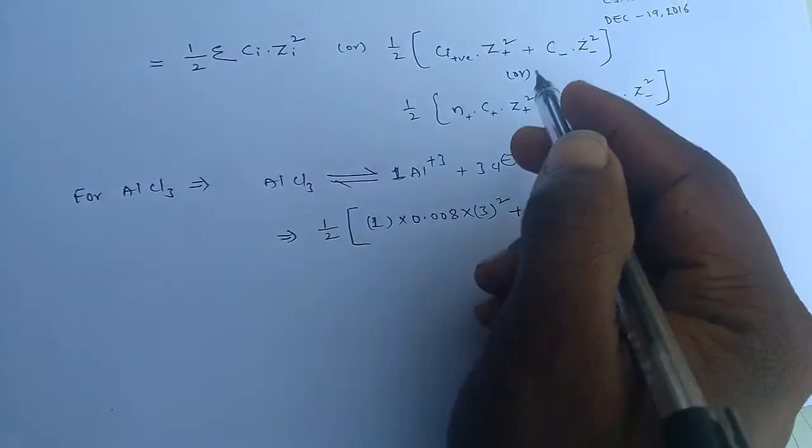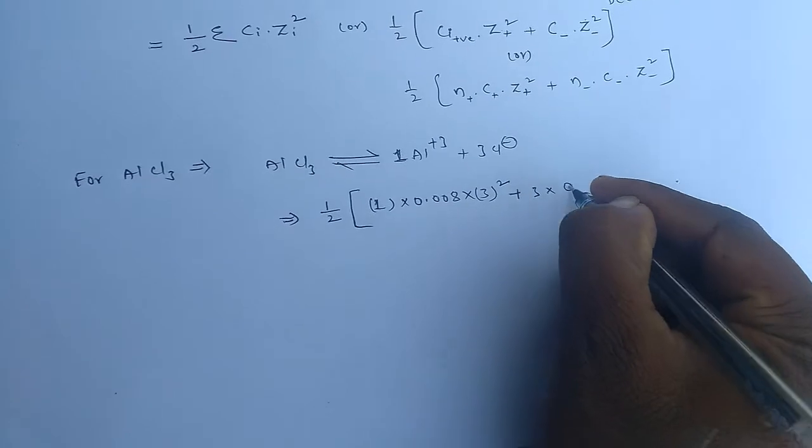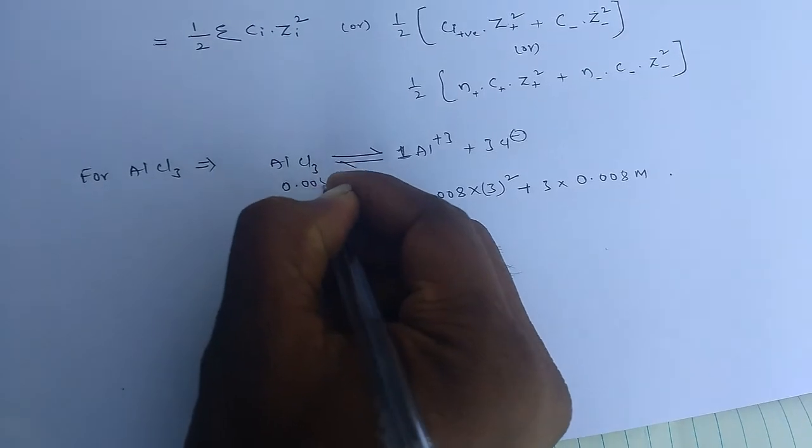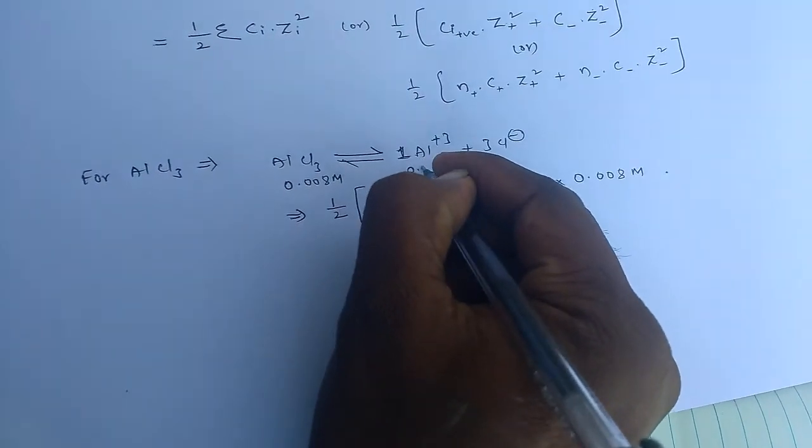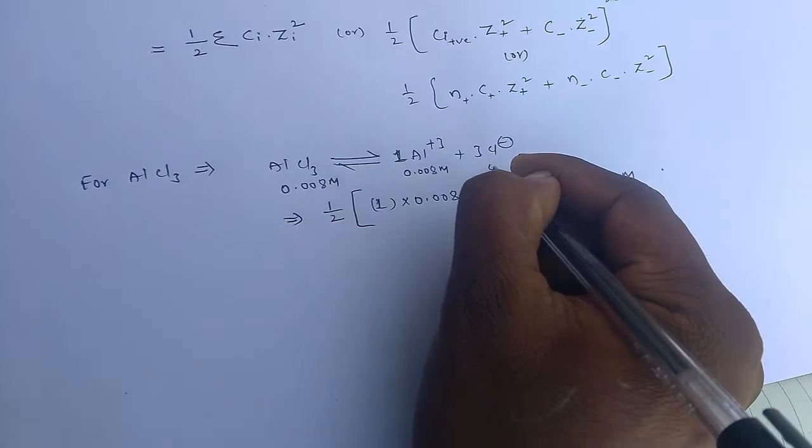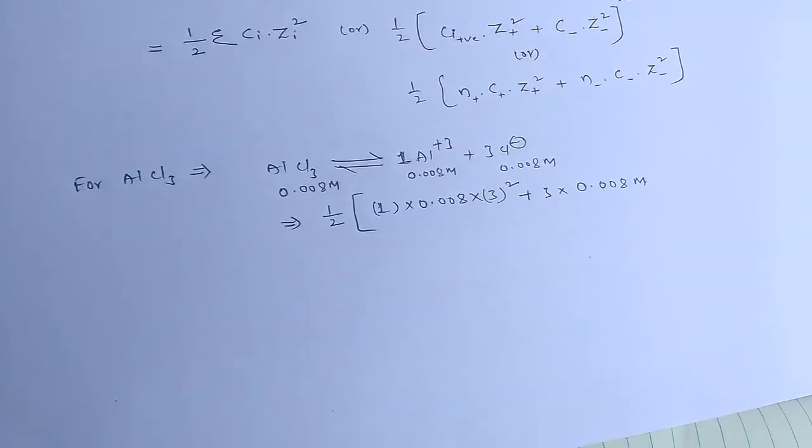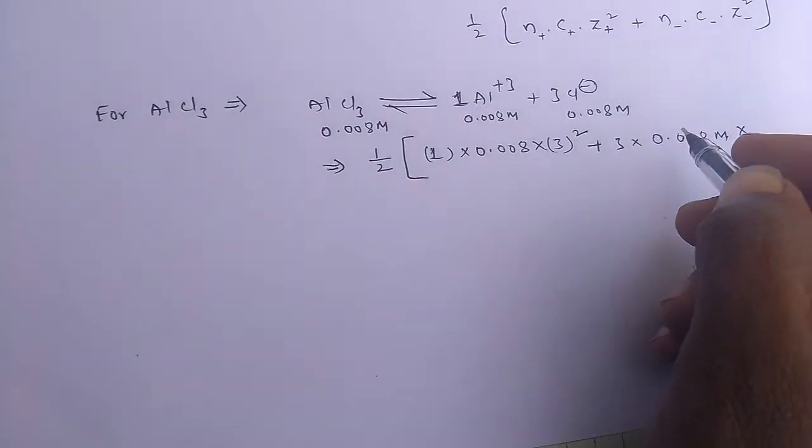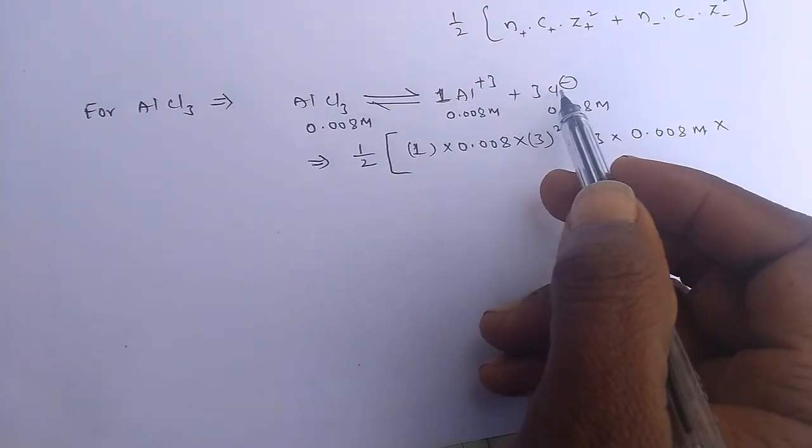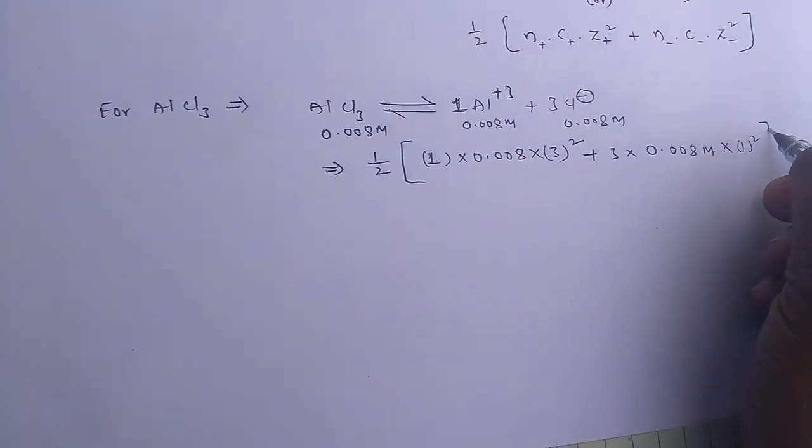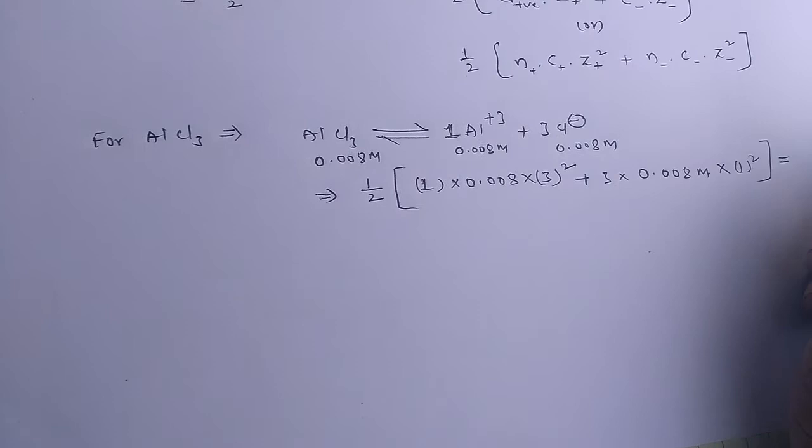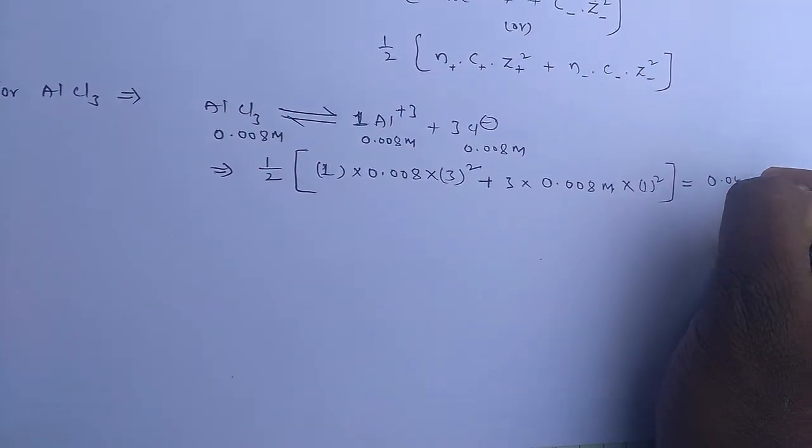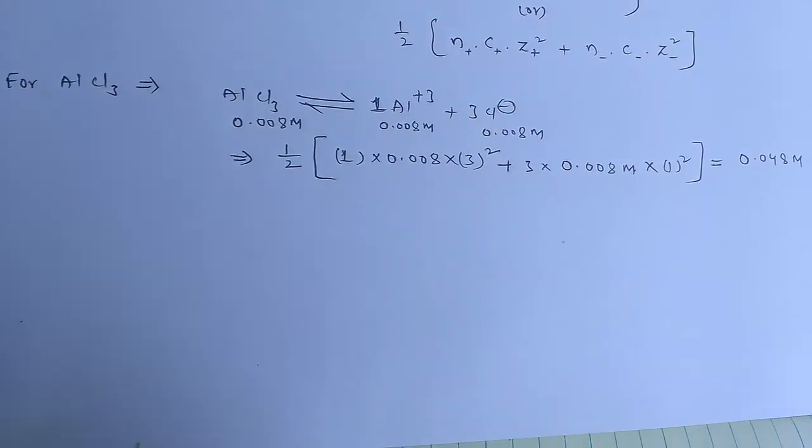Number of anions of this aluminum trichloride is 3, 3 into concentration of this one is 0.008 M. The concentration of 0.008 M for number of cations and 0.008 M number of anions. Into valency of this chloride ion is 1, so 1 square. By solving this, we can get 0.048 M concentration.